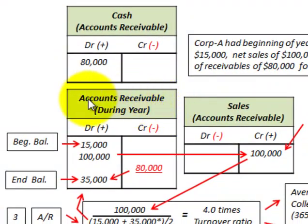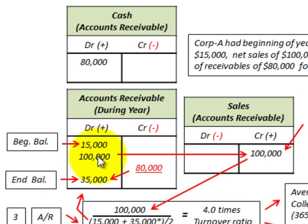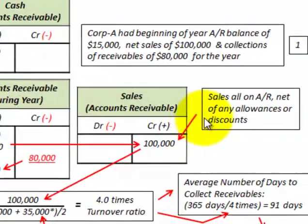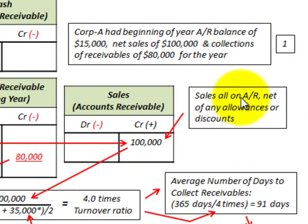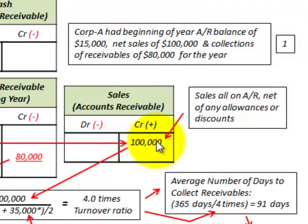Let's look at our accounts. For accounts receivable, the beginning balance is a debit of $15,000, and then we had sales of $100,000 for the year, all on account. So we'll debit accounts receivable for $100,000 and credit sales for $100,000. All these sales are on account, assigned to accounts receivable, and are net of any allowances or discounts. This represents net sales of $100,000 for the year.